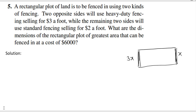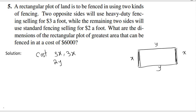So if the length is x feet, the cost for one heavy-duty side is 3 times x. Now introducing y for the second dimension: the length of the other two sides is y, and the cost per foot for those sides is 2 dollars, so each side costs 2 times y.